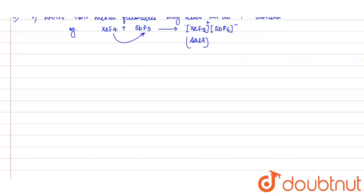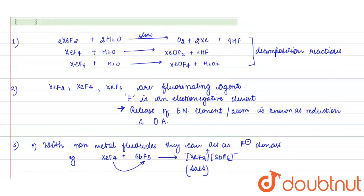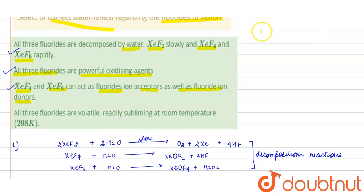With metal fluorides, they can accept fluoride ions. For example, the reaction of XeF6 with KF: it will accept the fluoride ion and form K+ XeF7-. This is also a salt, a complex compound. So the third statement is also correct.